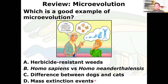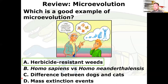Before we go into today's topic, let's talk about microevolution from last time. Microevolution is slow, gradual incremental changes over time within the same species. A good example is herbicide-resistant weeds. Over time, a weed species becomes more and more resistant as the herbicide kills the non-resistant members of that population, weeding them out of the gene pool. The resistant weeds pass on their genes to the next generation.